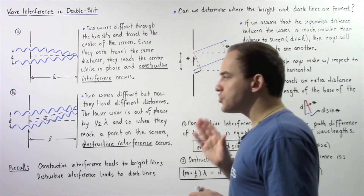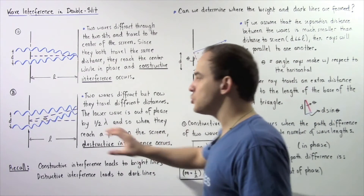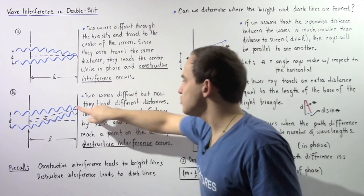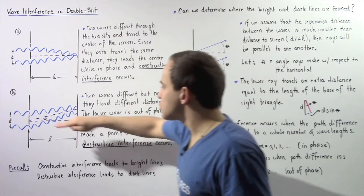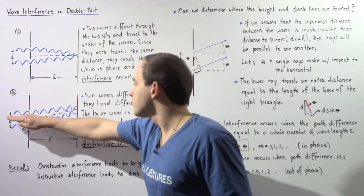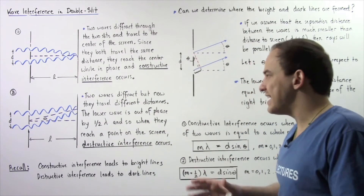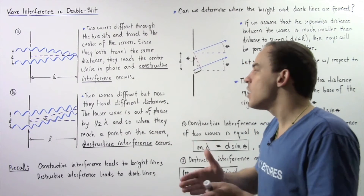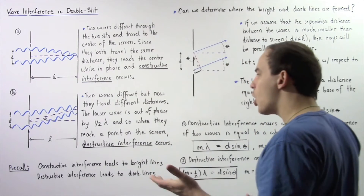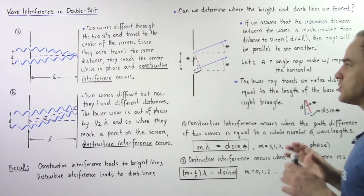Once again, we choose two waves with the same wavelength that are initially in phase. When they diffract, they travel different distances, traveling along a general direction that forms an angle theta with respect to the horizontal. The lower wave is out of phase by one-half multiplied by lambda when they finally reach this position, and so when they reach a point on the screen, destructive interference takes place.